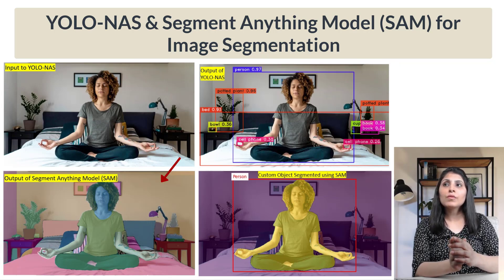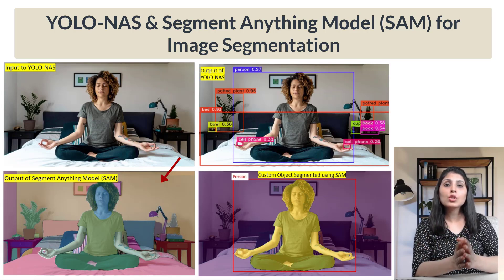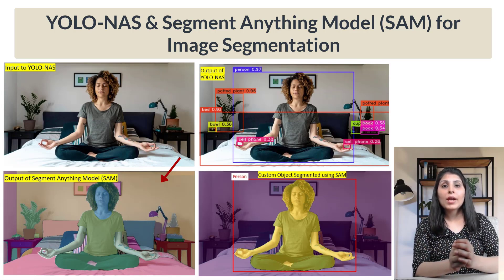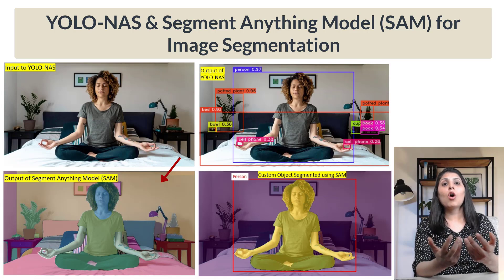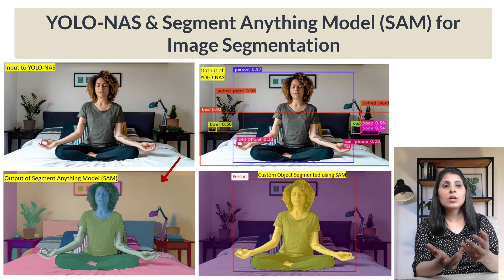The third image is the output of the Segment Anything Model. This is what you get when you provide any image to Segment Anything Model — it will provide the mask for all the objects present in the image.